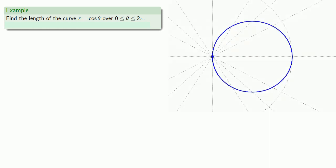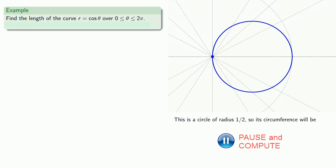And we see that it's a circle with radius 1/2. And so we might say to ourselves, self, this is a circle with radius 1/2. So the length of the curve is just going to be the circumference of a circle with radius 1/2, which will be π.